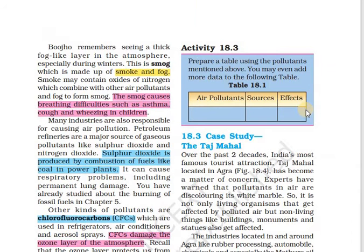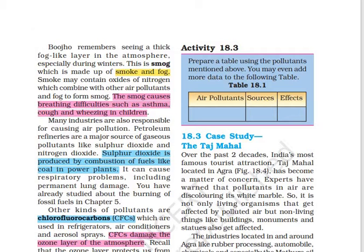Smog is another major air pollutant. Smog is a combination of smoke and fog. It causes breathing difficulties such as asthma, cough and wheezing in children. Smog contains oxides of nitrogen which combine with air pollutants and fog to form smog.